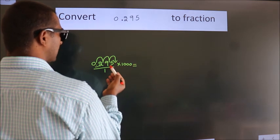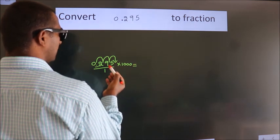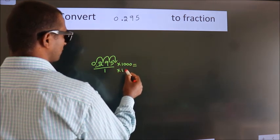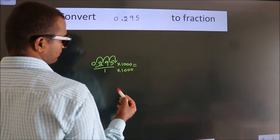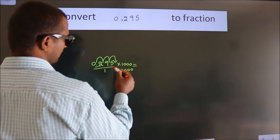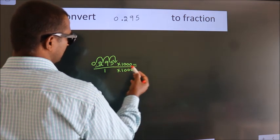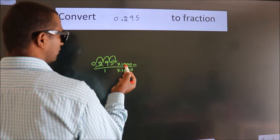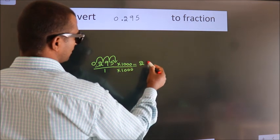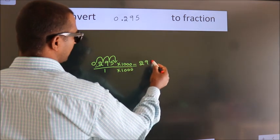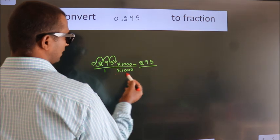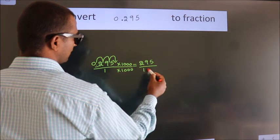Whatever you are multiplying in the numerator, in the denominator also do the same. So 0.295 into 1000 gives 295, and 1 into 1000 gives 1000.